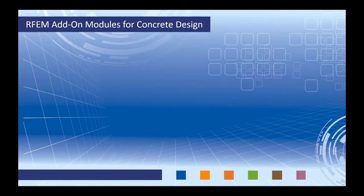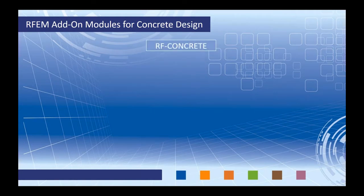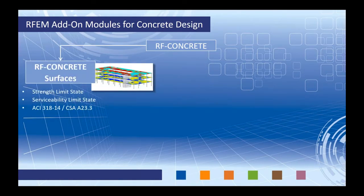RFEM is our main program. This allows us to fully model and load the structure. We can create load combinations according to the ASCE 7 and the IBC standard and run a full analysis. With the analysis we're going to get internal forces and deflections, and we can take those into our own tools — whether that's in-house tools to do the reinforcement design. Now in turn we have our RF Concrete modules within RFEM, which consist of two separate modules. The first is RF Concrete Surfaces, which allows us to run a strength and serviceability limit state design for 2D surfaces — whether that's elevated slabs or wall elements — including design per the ACI and the CSA standard as well as several other international standards.